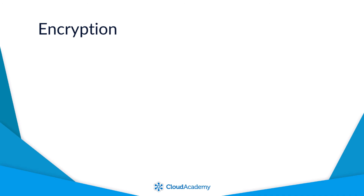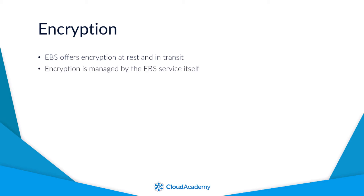One great feature of EBS is its ability to enhance the security of your data, both at rest and when in transit, through data encryption. This is especially useful when you have sensitive data, including personally identifiable information, stored in your EBS volume. In this case you may be required to have some form of encryption from a regulatory or governance perspective. EBS offers a very simple encryption mechanism — you don't have to worry about managing the data keys to perform the encryption process yourself. It's all managed and implemented by EBS.